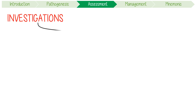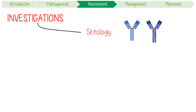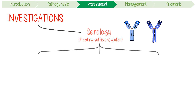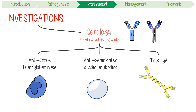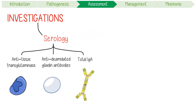To investigate celiac disease, you should start with serology testing. Keep in mind that this can only be done when a person is currently eating a sufficient amount of gluten in their diet, equivalent to four slices of bread. There are three tests: anti-tissue transglutaminase, anti-deaminated gliadin antibodies, and total IgA. This last test is used to exclude celiac disease-associated IgA deficiency, which can cause false negative antibody tests.